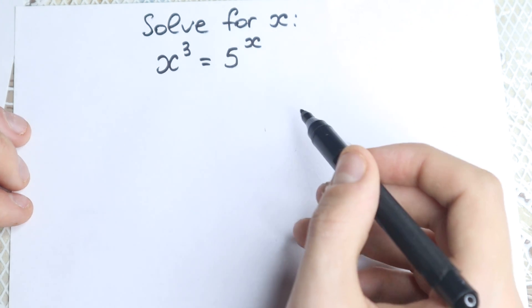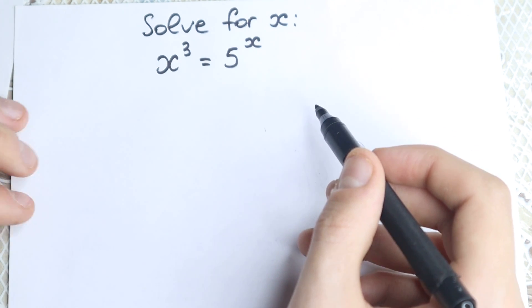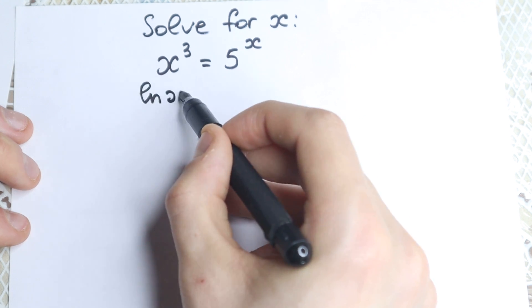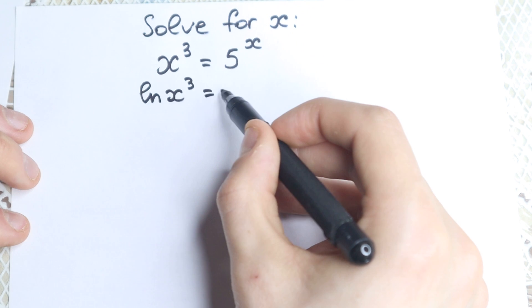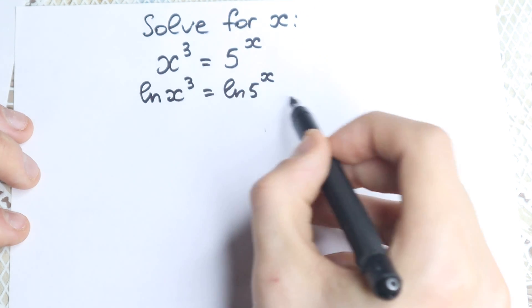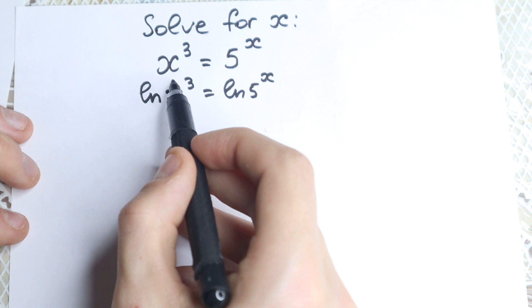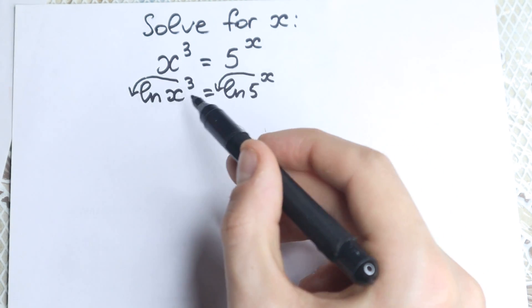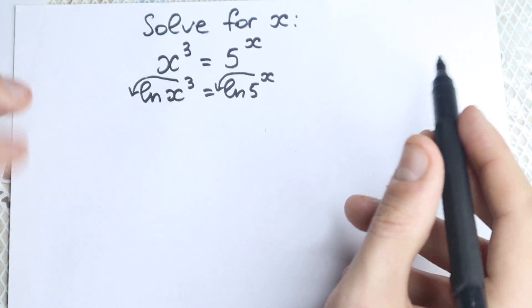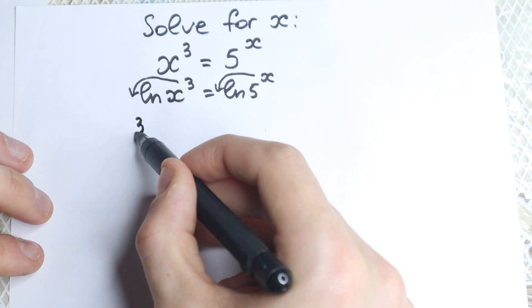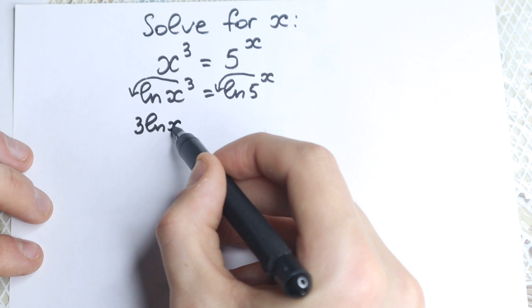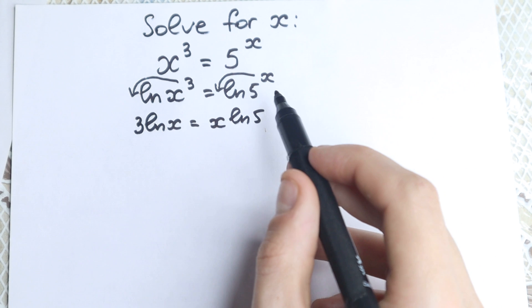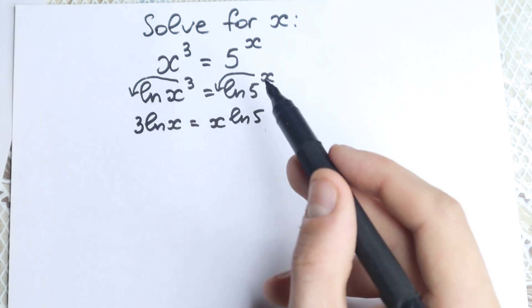First of all, we need to apply the natural log. This is our first step — a very easy step. If we apply natural log on both sides, we get natural log of x³ equal to natural log of 5 to the x. We can bring down the 3 and the x as exponents. So right now we have 3·ln(x) equal to x·ln(5). We just applied natural log on both sides.